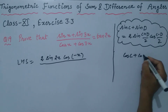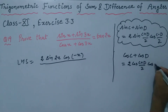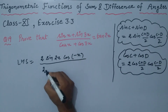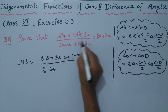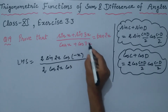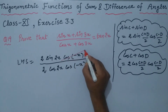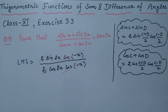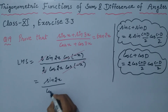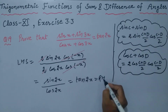For the denominator, cos C plus cos D equals 2 cos (C+D)/2 into cos (C-D)/2. Denominator becomes 2 cos (x+3x)/2 = 2x, into cos (x-3x)/2 = minus x. The cos(minus x) terms cancel and the 2's cancel, leaving sin 2x upon cos 2x, which equals tangent of 2x — the right hand side. Hence proved.